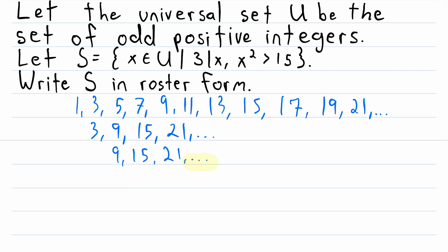So the ellipsis tells us that to get the next number in the list, we just have to add 6 to 21, and that would be 27.